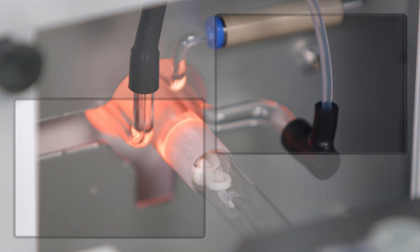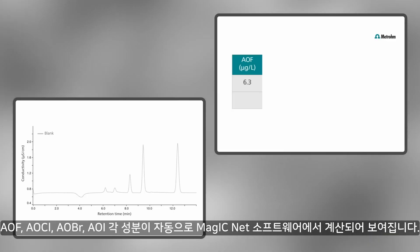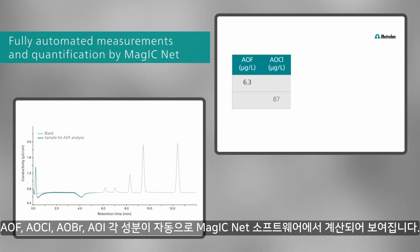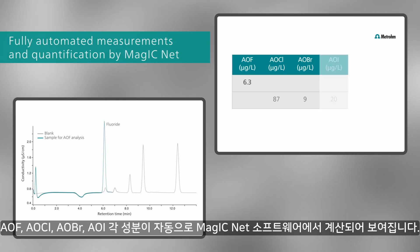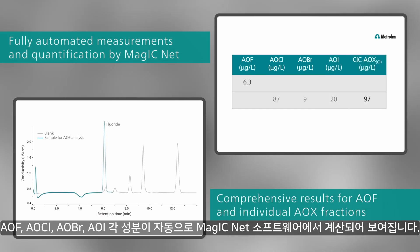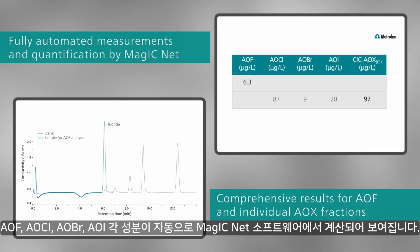The AOF content as well as the individual fractions of AOX, AOCl, AOBr, and AOI are automatically calculated by the MagicNet software.